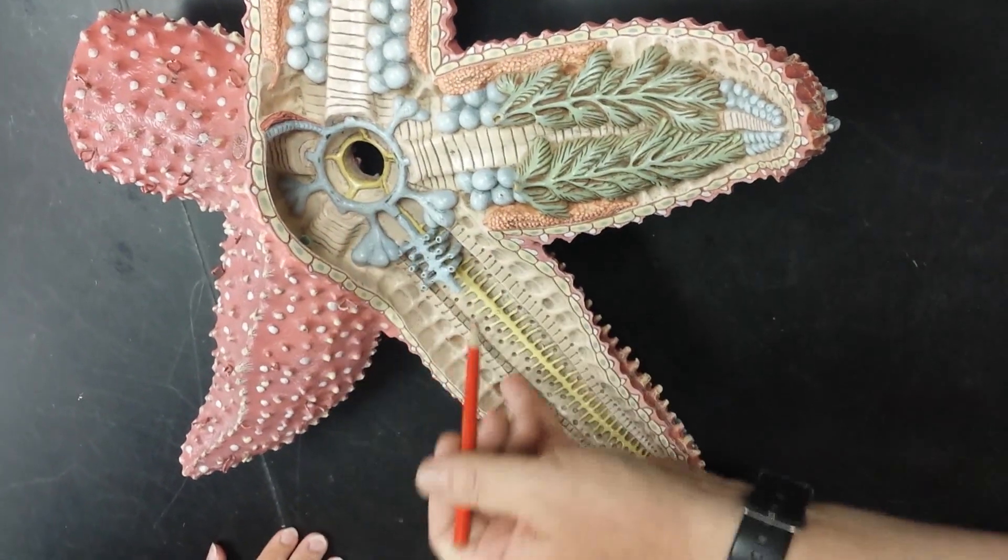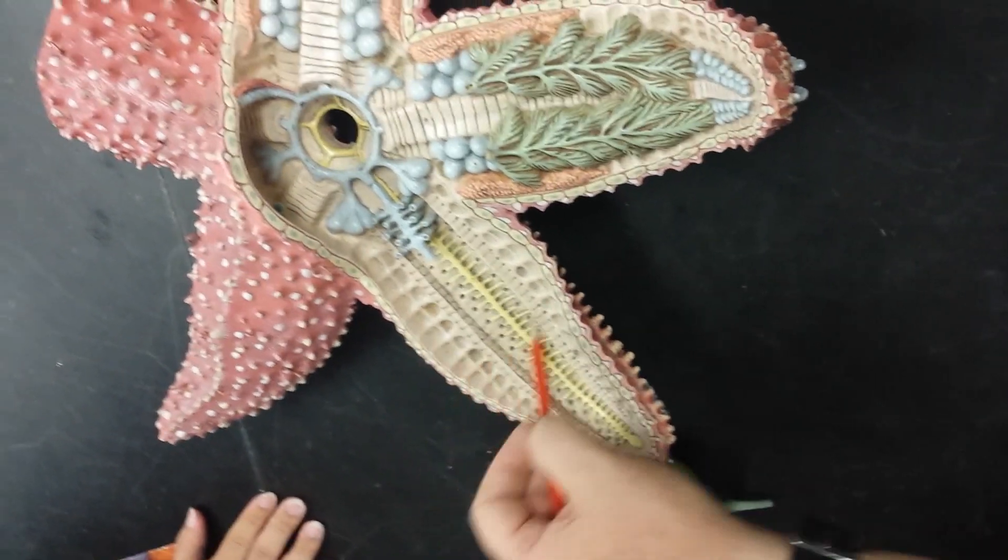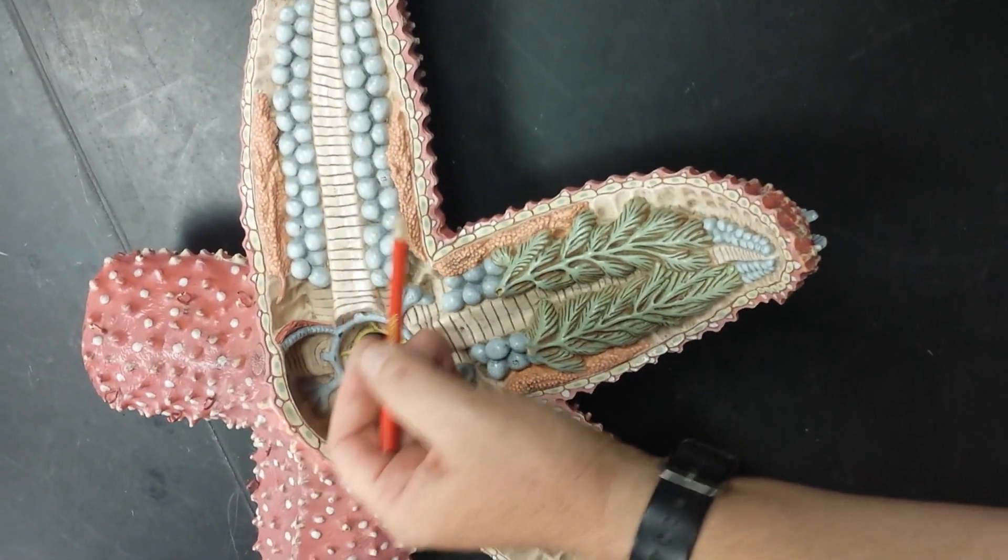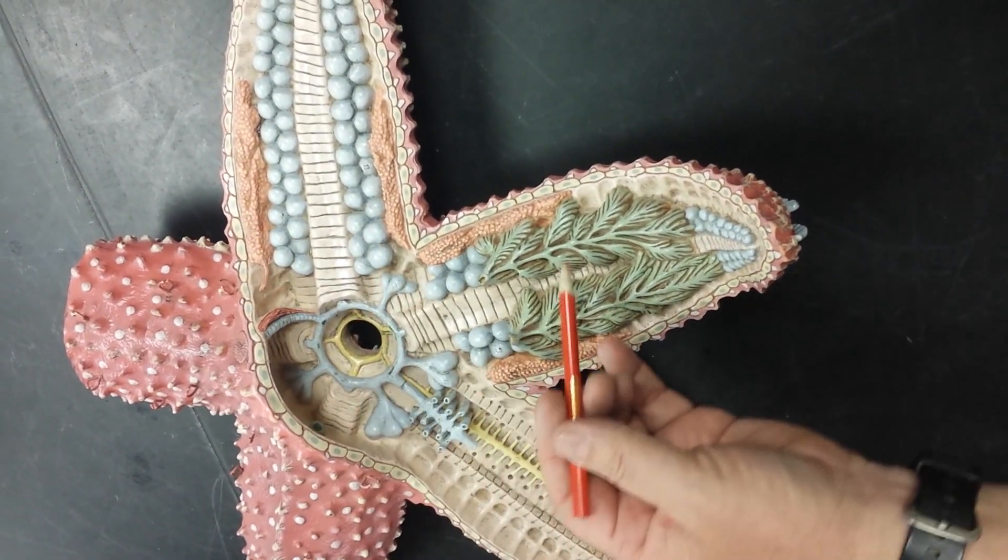Here's the ring nerve and the radial nerve. This space in here is the coelom. These are ampullae. This is the ambulacral ridge. Here are gonads. This is pyloric caeca.